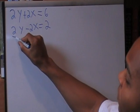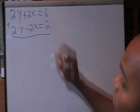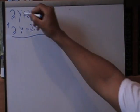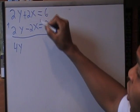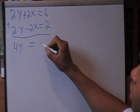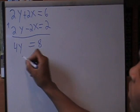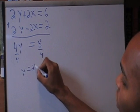The name is called the addition method, so we're actually going to add the two equations together. 2y plus 2y is 4y, 2x minus 2x is 0, and 6 plus 2 is 8. We divide both sides by 4, and we're left with y equals 2.